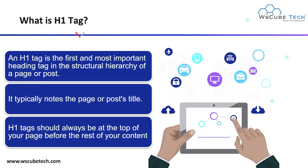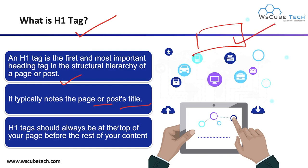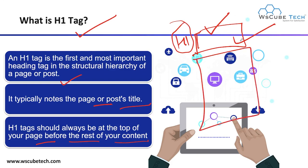The H1 tag is the first and most important heading tag in the structural hierarchy of a page or post. It is the topmost heading of your particular page and typically notes the page or post title. H1 should always be at the top of your page before the rest of the content. When users read your H1, they understand it is the summarized form of the content, and after reading it, they consider your whole content to be relevant to that headline.